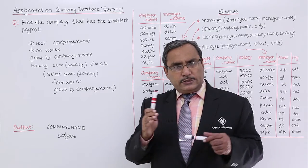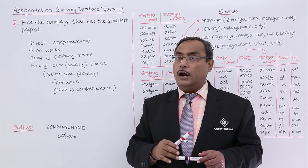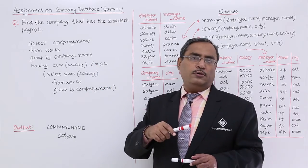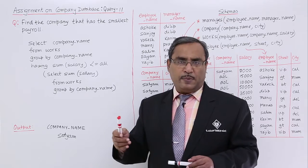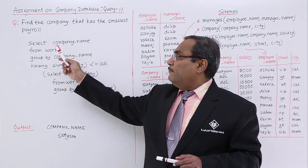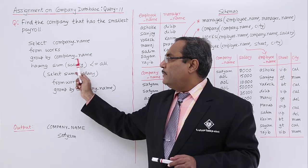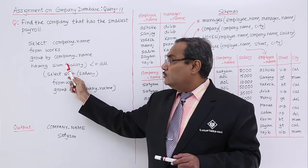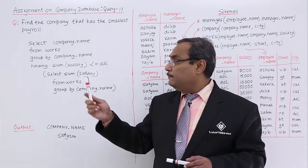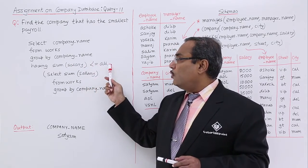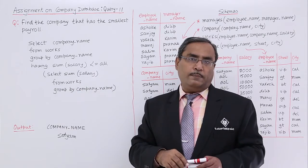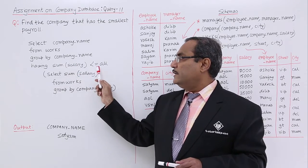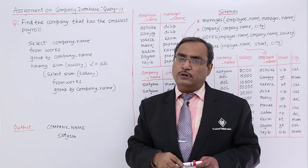Sometimes nesting of aggregate functions is not allowed, so we use clauses like greater than equal to all, greater than all, less than equal to all, or less than all. The full query is: SELECT company_name FROM works GROUP BY company_name HAVING SUM(salary) <= ALL (SELECT SUM(salary) FROM works GROUP BY company_name). The company whose payroll matches the minimum value — because the equal sign is included — will appear in the output.